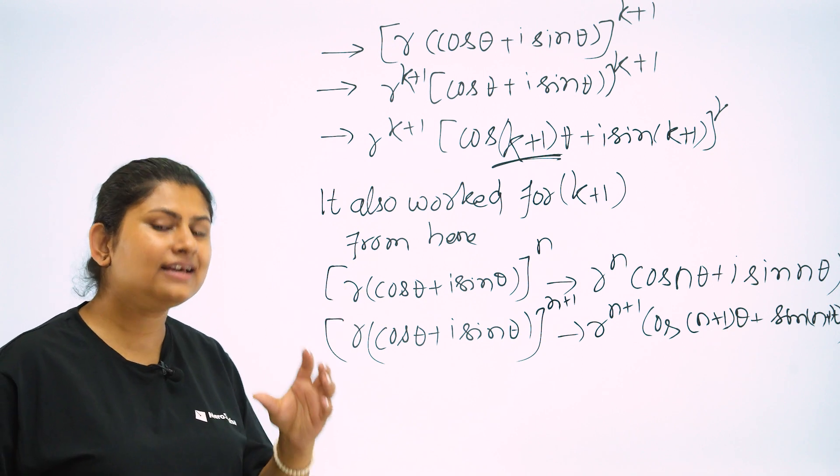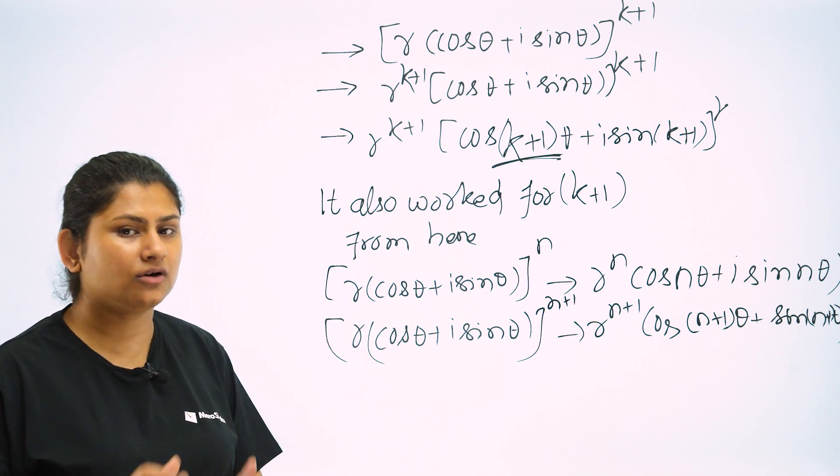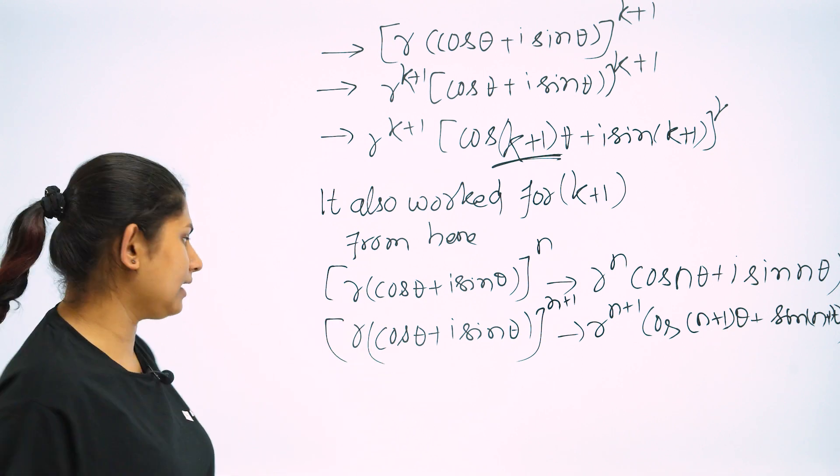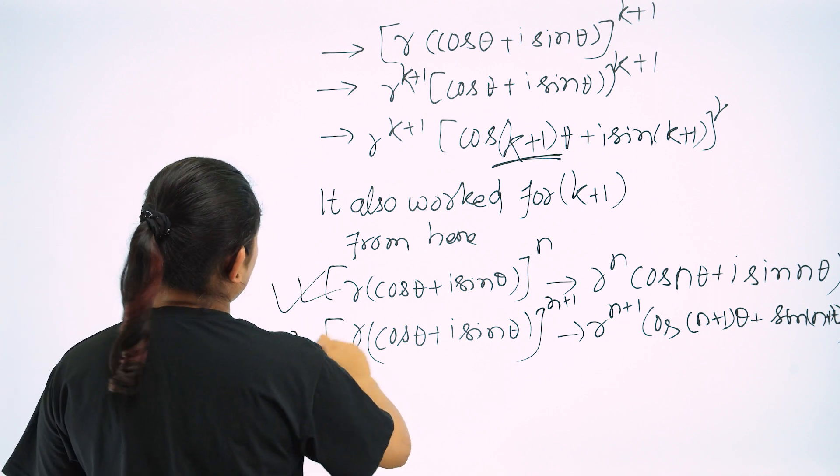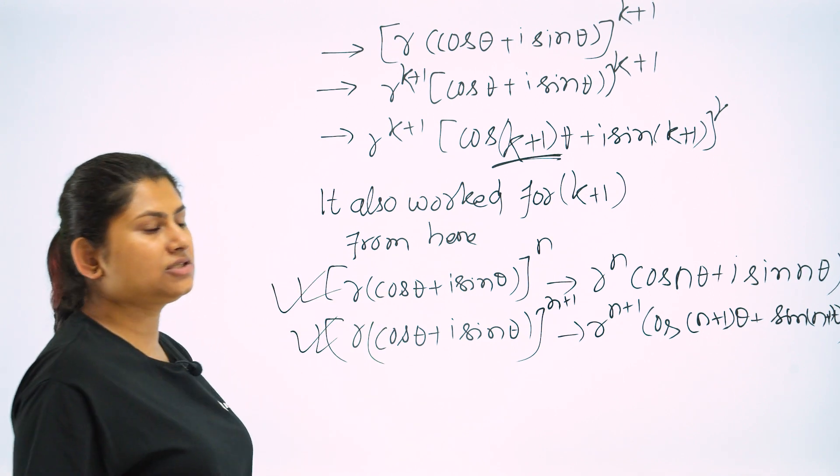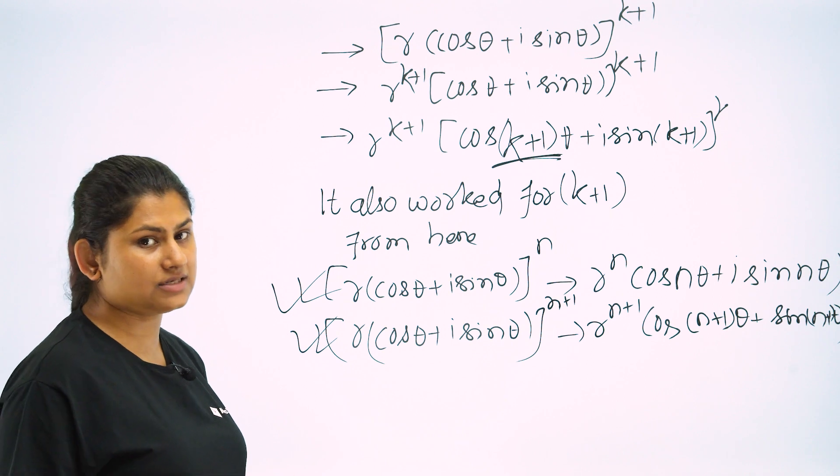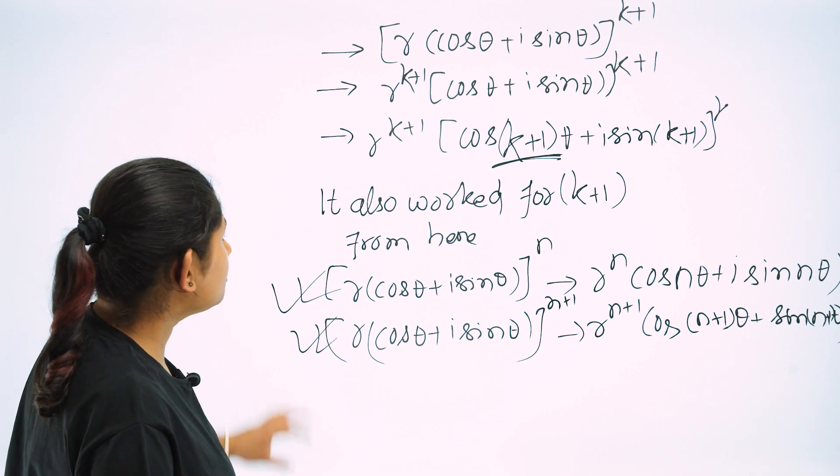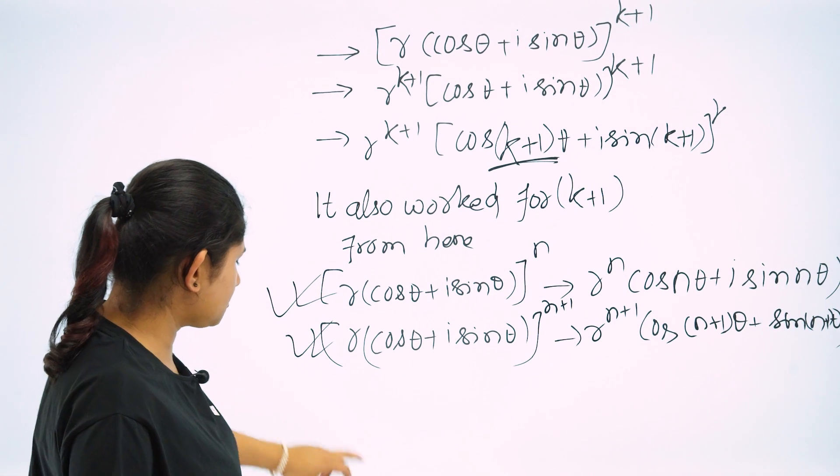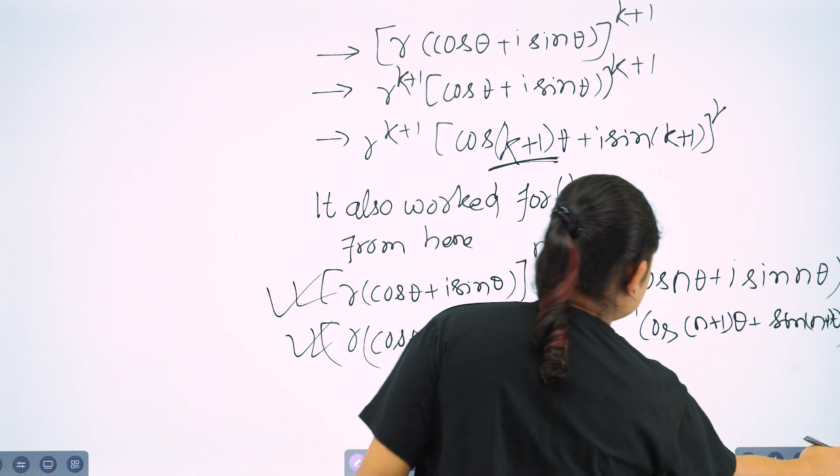It worked for 1, it worked for 2. That means it should work for k and k plus 1. If it works for k and k plus 1, then it can work for n and n plus 1.